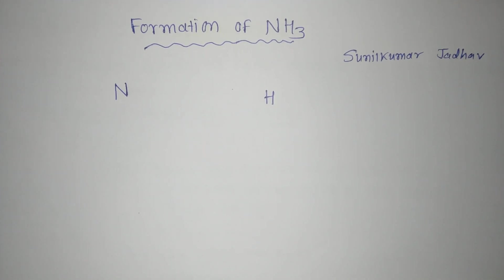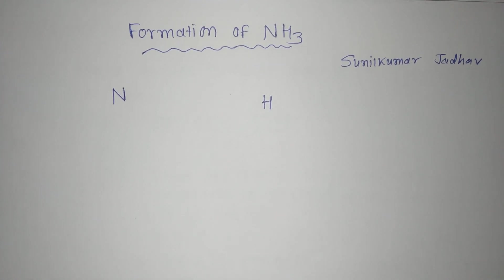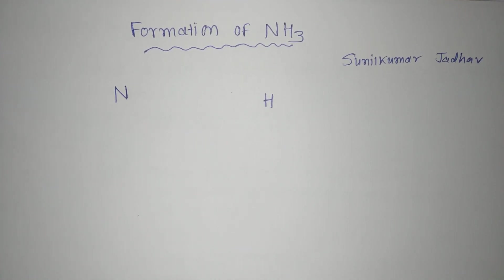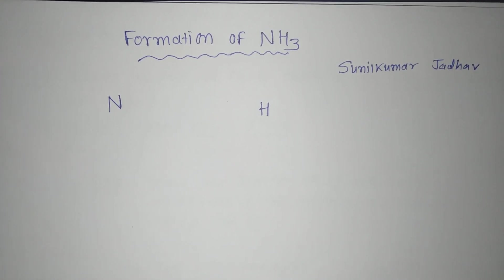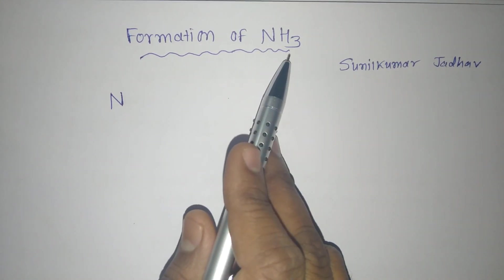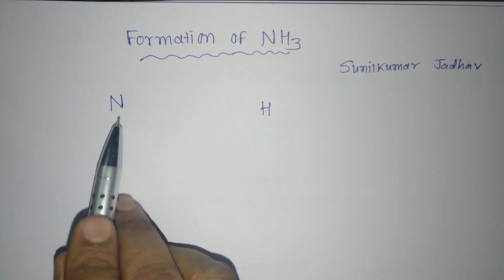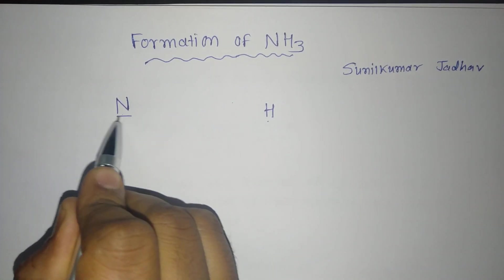How does it form by electronic configuration? I will explain it here. One of my students had given me a comment that please sir explain about the electronic configuration and the formation of NH3. So here is this video for you. In this formation of ammonia NH3, there are two different atoms: one is nitrogen and another one is hydrogen.